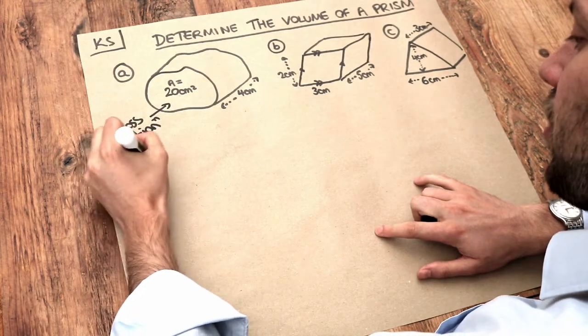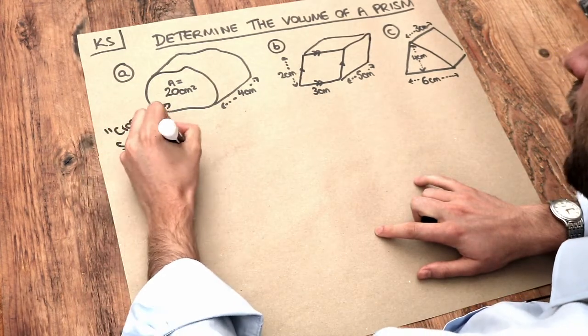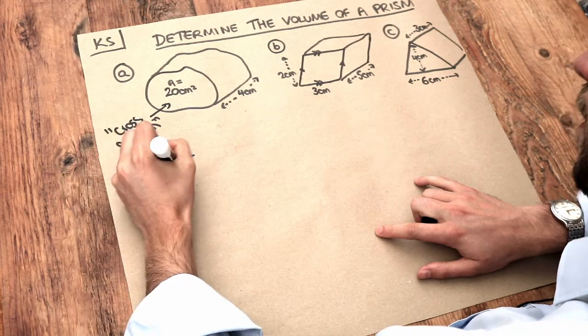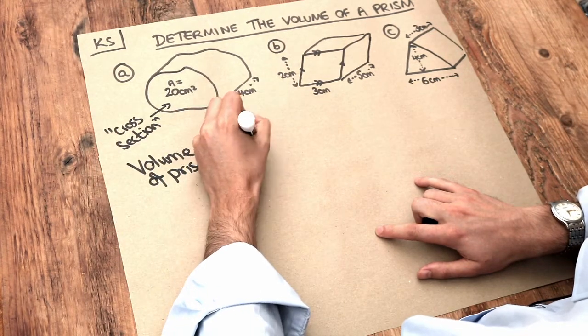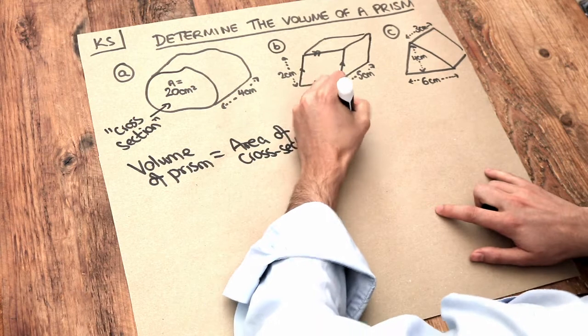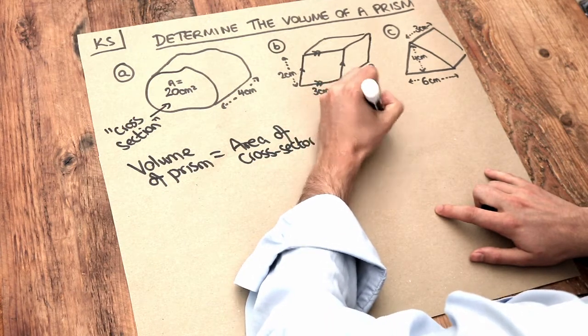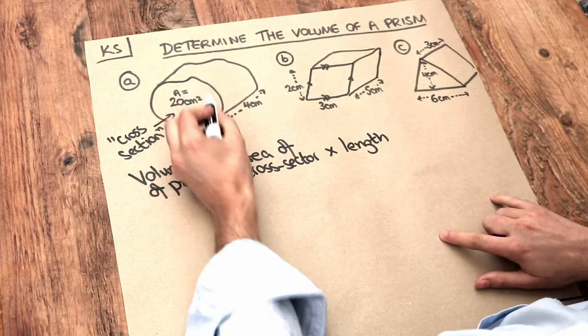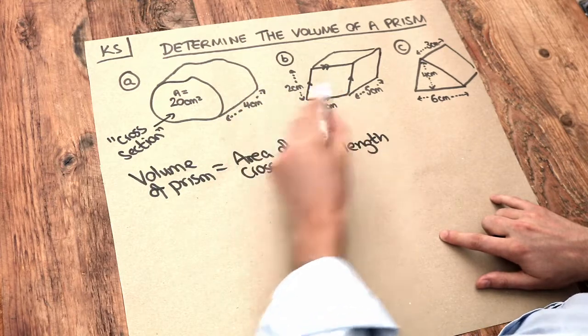The volume of a prism has a relatively simple formula. It's just this: the area of the cross section multiplied by the length of the prism. So in this case that's the cross section and that's the length of the prism.